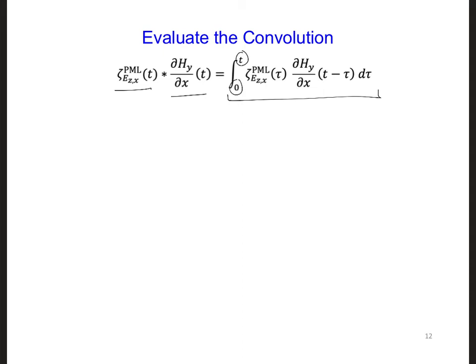Then since our FDTD model is discretized in time, we need to write this expression in terms of time steps rather than as a continuous time integral. We can do this using what's called a piecewise constant approximation, where we assume that zeta and d hy d x are constant over each time step.